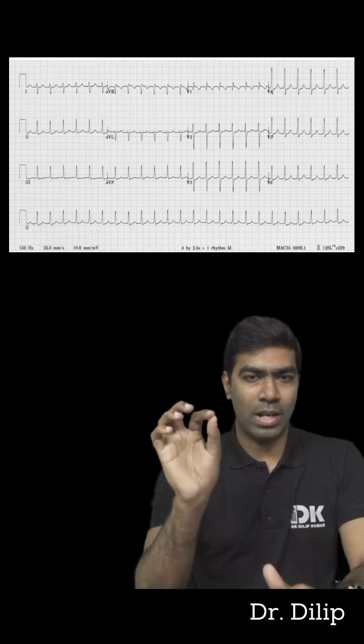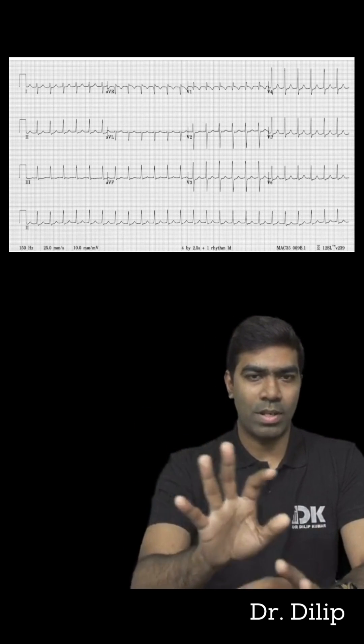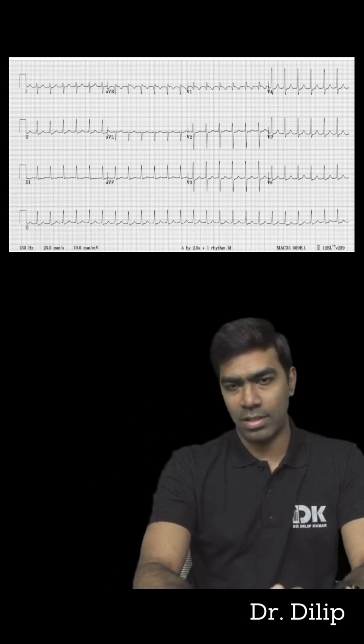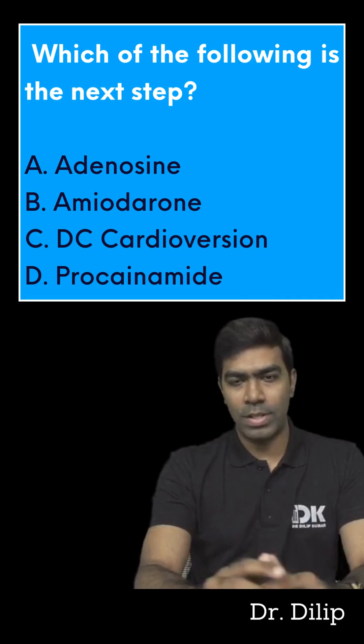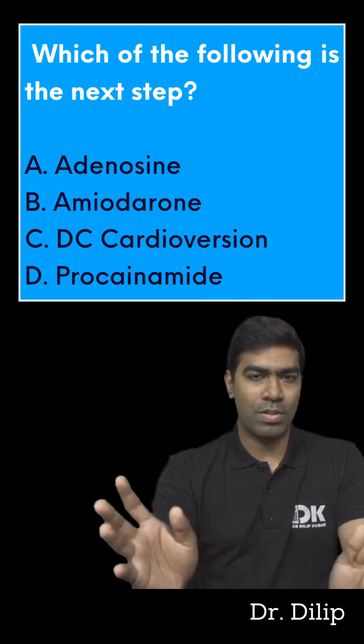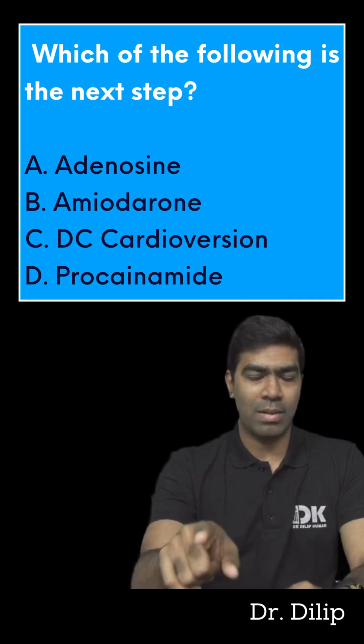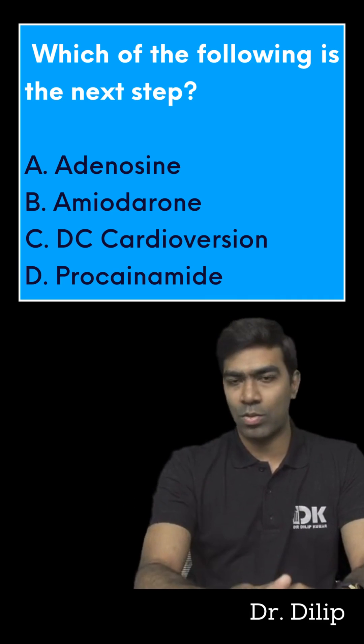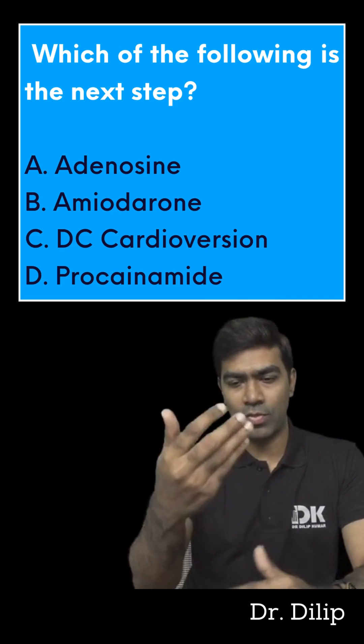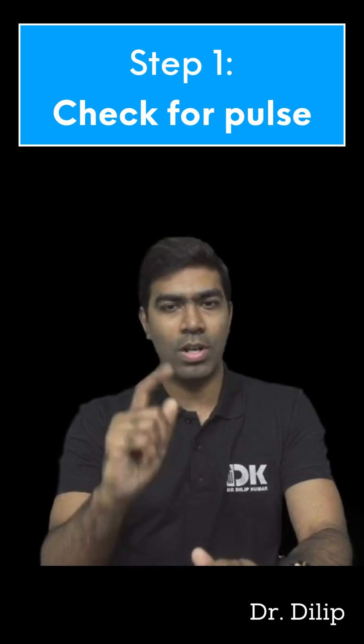What is the ECG showing? It's showing a regular narrow complex tachycardia. So what is going to be the next step? In exams, most of the time they're going to ask the therapy rather than the diagnosis itself. So let us follow a stepwise protocol.